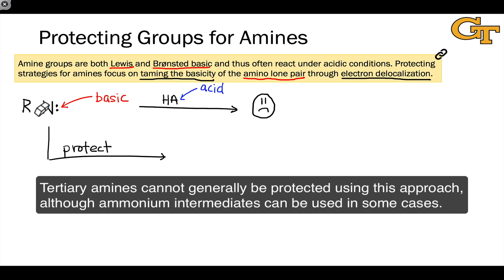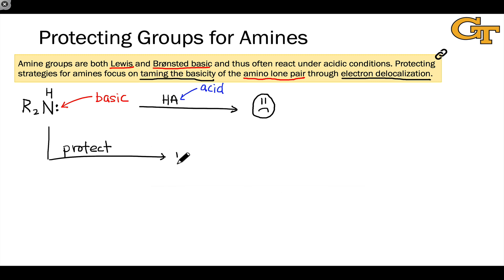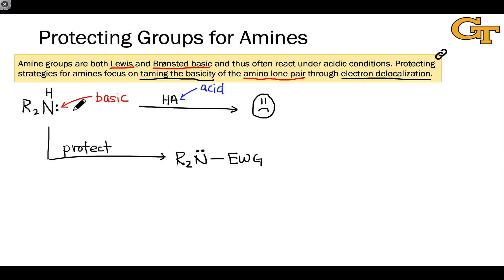At the protection stage, we replace one of the R groups with a hydrogen, since typically what's done is substituting for this hydrogen a group that is electron-withdrawing. So at the protection stage, we end up in general with a structure where an electron-withdrawing group is linked to nitrogen, and this decreases the basicity of the amino lone pair to negligible levels.